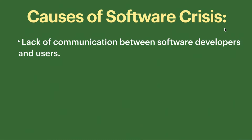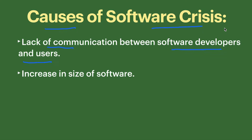Now let's discuss the causes of software crisis. The first cause is lack of communication between the software developer and the users. If a user wants to develop software but communication between the developer and the client is not good, that is a cause. Another cause is an increase in size of the software — if the size is increasing and it is not within budget, that is another reason.